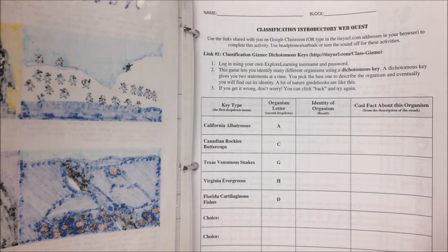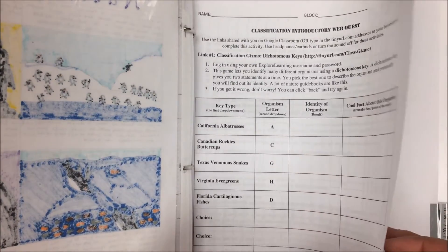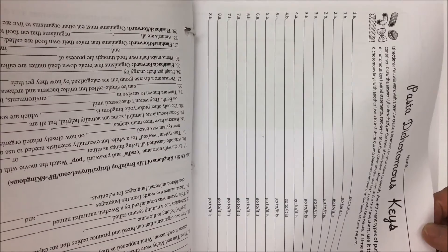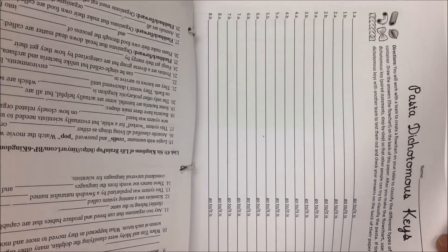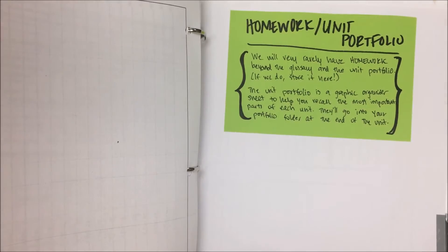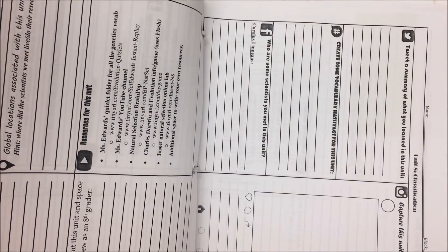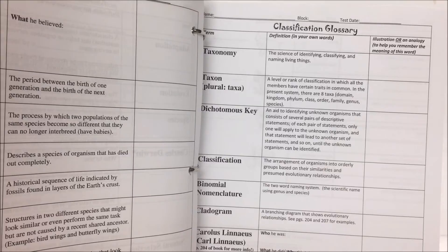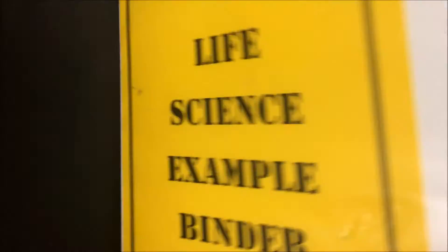In your labs and project section you have the classification introductory web quest, as well as the pasta dichotomous key activity, if you chose to complete that in class. And as always you have your unit portfolio on classification and your classification glossary.